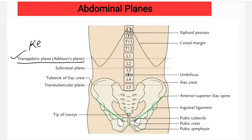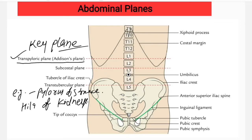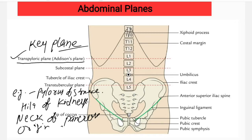This plane is also known as the 'P plane' of the abdomen because it corresponds to a number of abdominal viscera — for example, the pylorus of the stomach, the hilum of the kidneys, the neck of the pancreas, and the origin of the superior mesenteric artery.